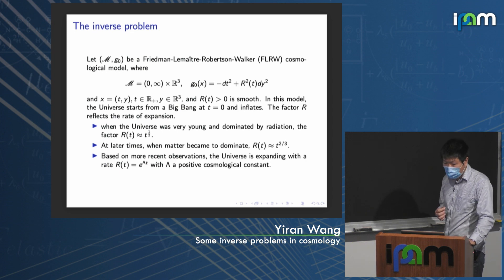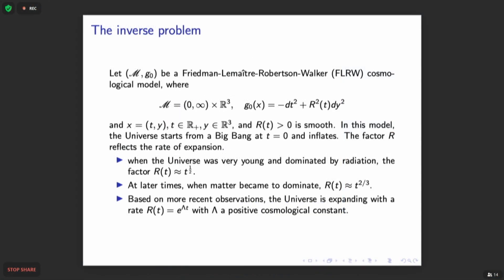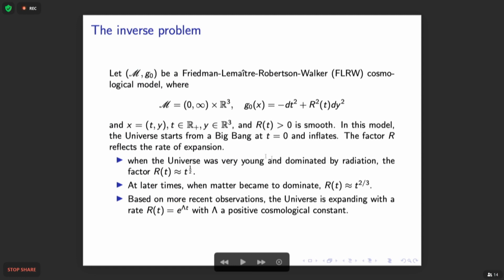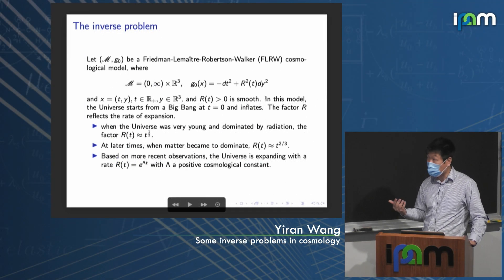I will consider a Friedmann-Lemaître-Robertson-Walker cosmological model, where M equals [0,∞) × R³ with metric g = −dt² + R²dy². Here R(t) is the scale factor. In this model, the universe starts from the Big Bang at t=0 and then starts to inflate. Depending on the matter model used for the universe, R(t) could have a different form. We consider the actual universe metric to be m_g, where g is a perturbation of g₀.